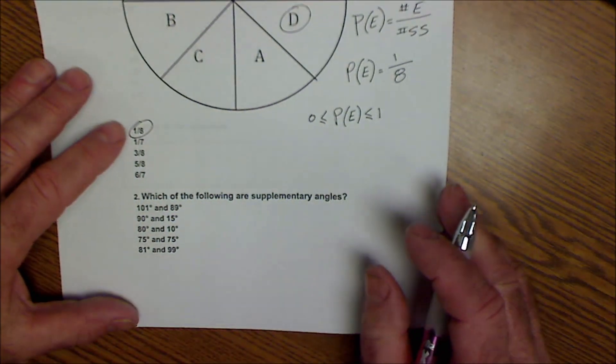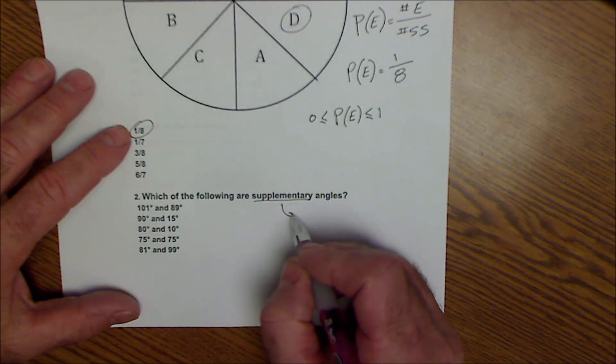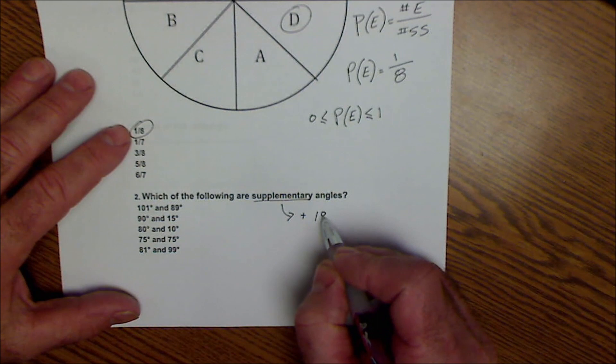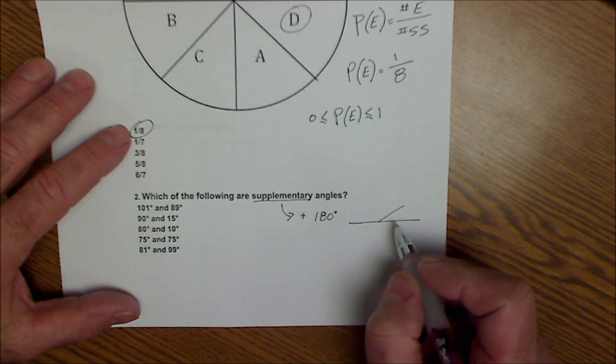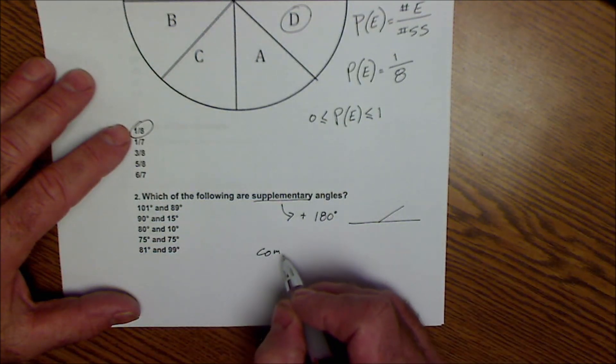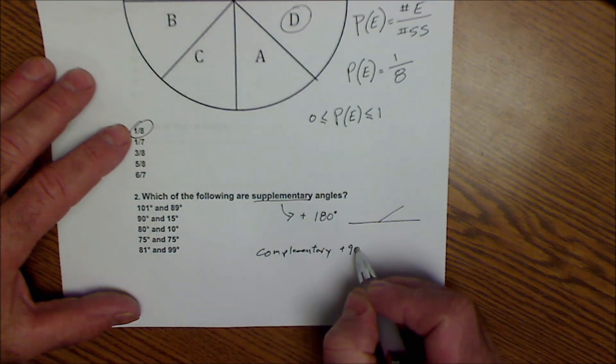Okay, number two. Which of the following are supplementary angles? Supplementary means they add up to 180 degrees. So a linear pair, two angles on a line would be supplementary. The other word, complementary, are two angles that add up to 90 degrees.